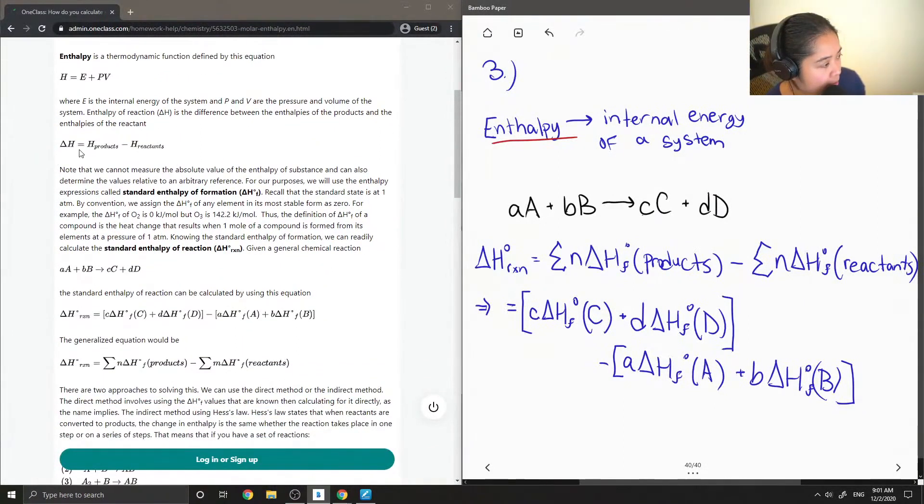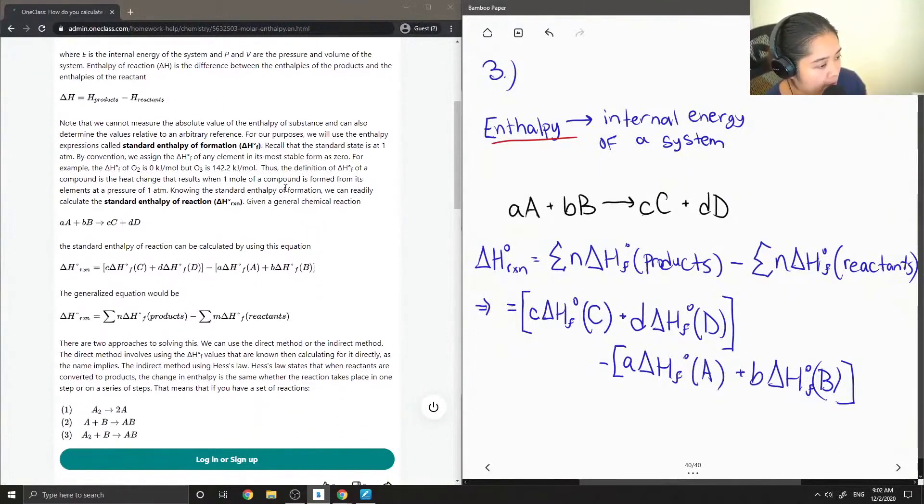They have here delta H equals the enthalpies of the products minus reactants. Note that we cannot measure the absolute value of the enthalpy of substance and can only determine the values relative to an arbitrary reference. For our purposes, we will use the enthalpy expressions called standard enthalpy of formation. Recall that the standard state is at 1 atm. By convention, we assign delta H of formation of any element in its most stable form as zero.